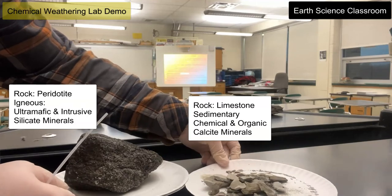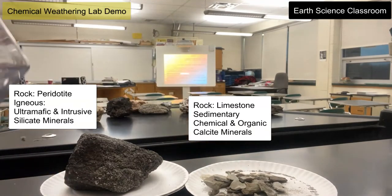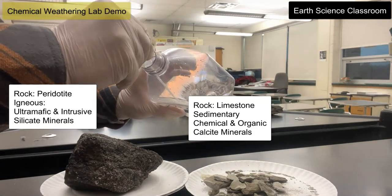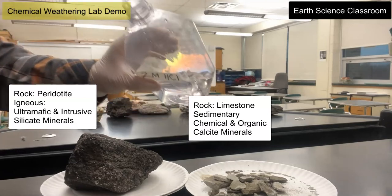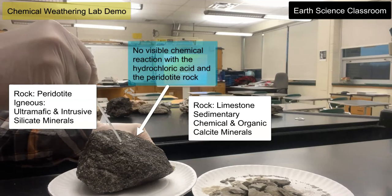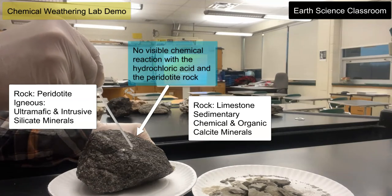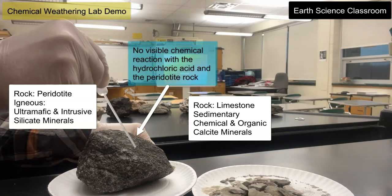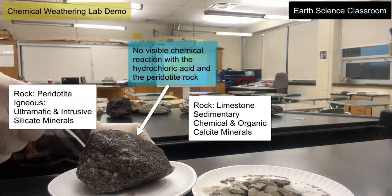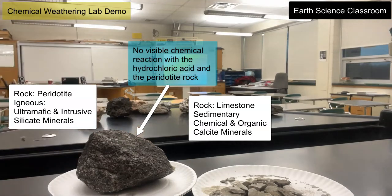I'll use a pipette, taking out a little sample of the hydrochloric acid, and show you what's going to happen on the pyrotite — the ultramafic intrusive igneous rock. There is very little reaction; no real chemical reaction. The acid kind of just runs off the outside of the rock and there's no real breakdown, no chemistry going on there.